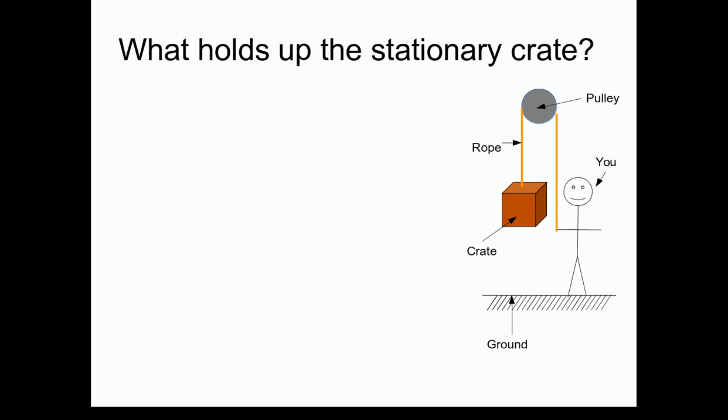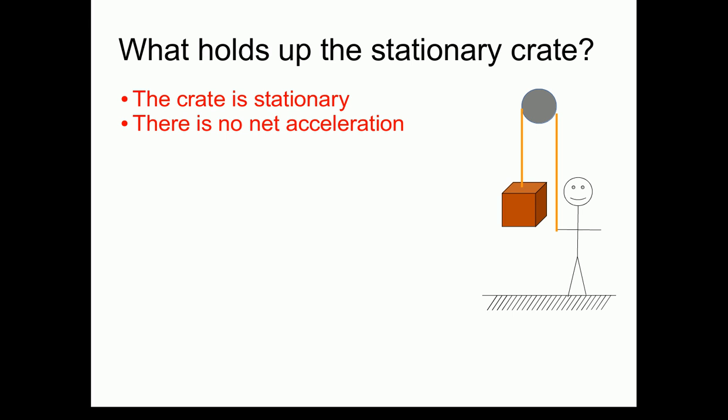Well, the rope does, but we want to explore this situation using our physics language. Let's consider this situation from a physics perspective. What do we know about the crate? We know that the crate is stationary. The fact that the crate is stationary means that the velocity isn't changing with respect to time. In other words, there is no net acceleration.